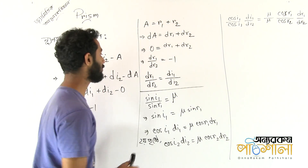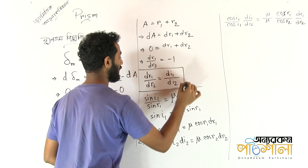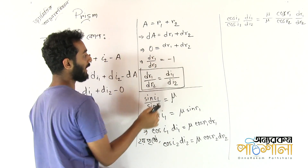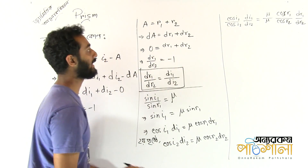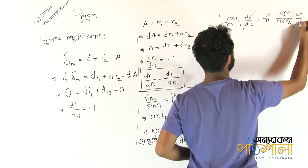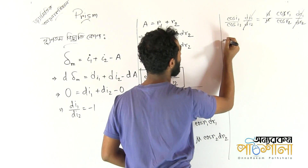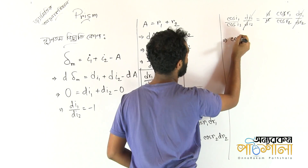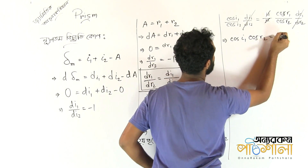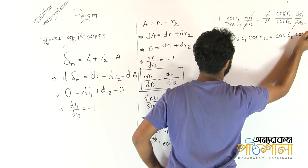Noticing carefully, we have the equation dr1 by dr2 equals dI1 by dI2. Substituting and cancelling μ, we ultimately get cos(i1)·cos(r2) equals cos(i2)·cos(r1).